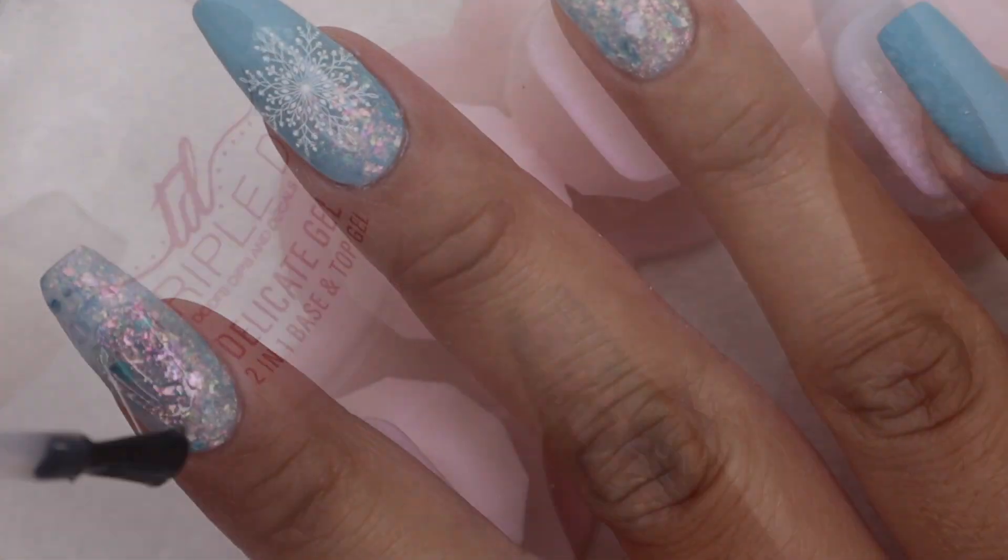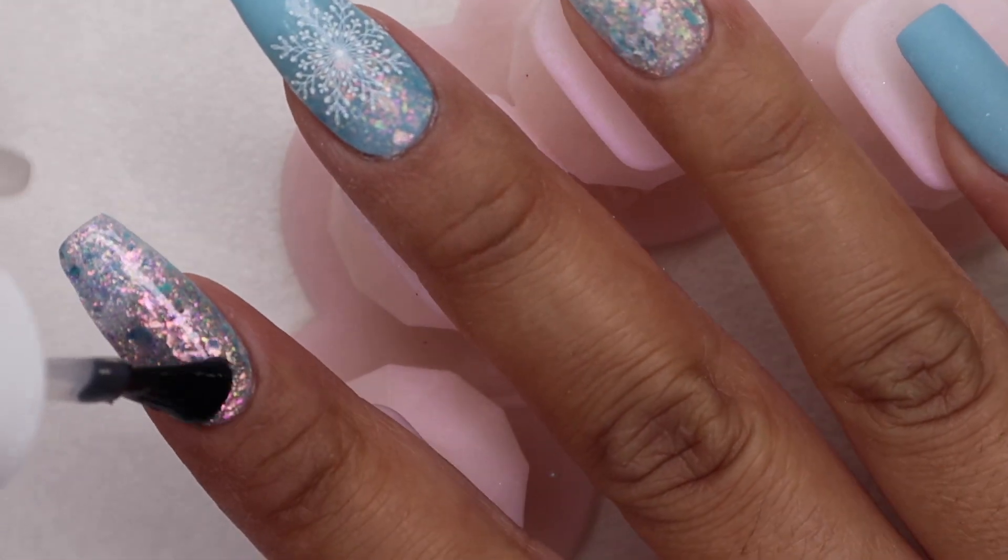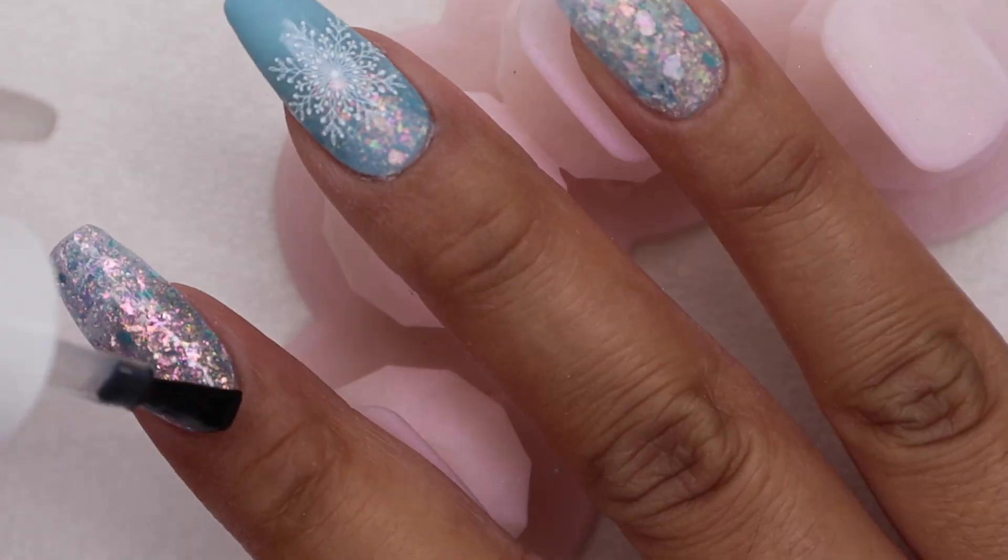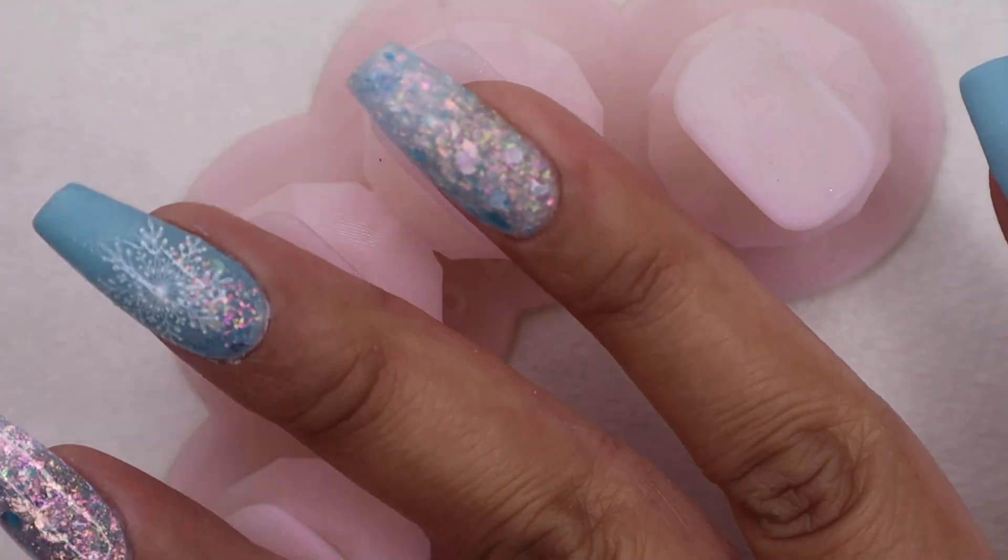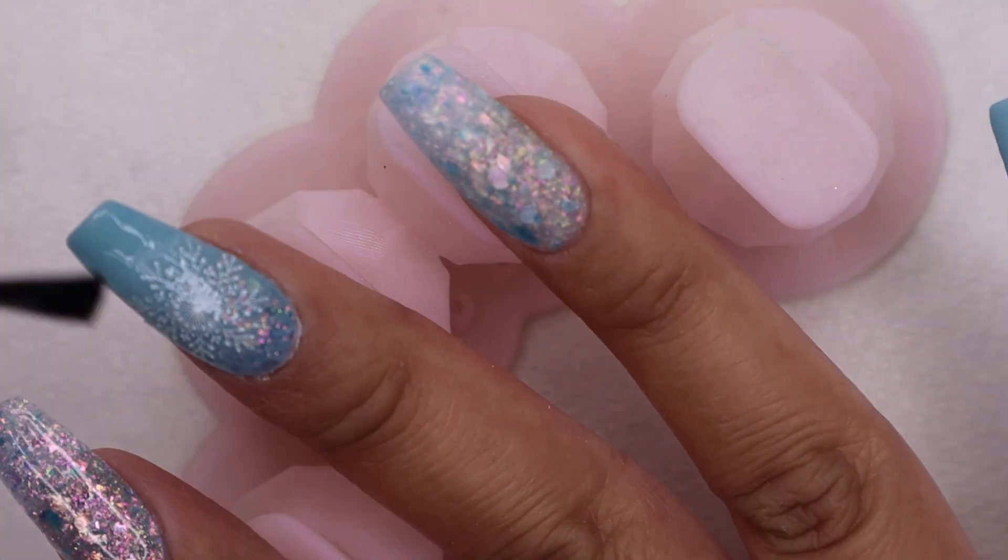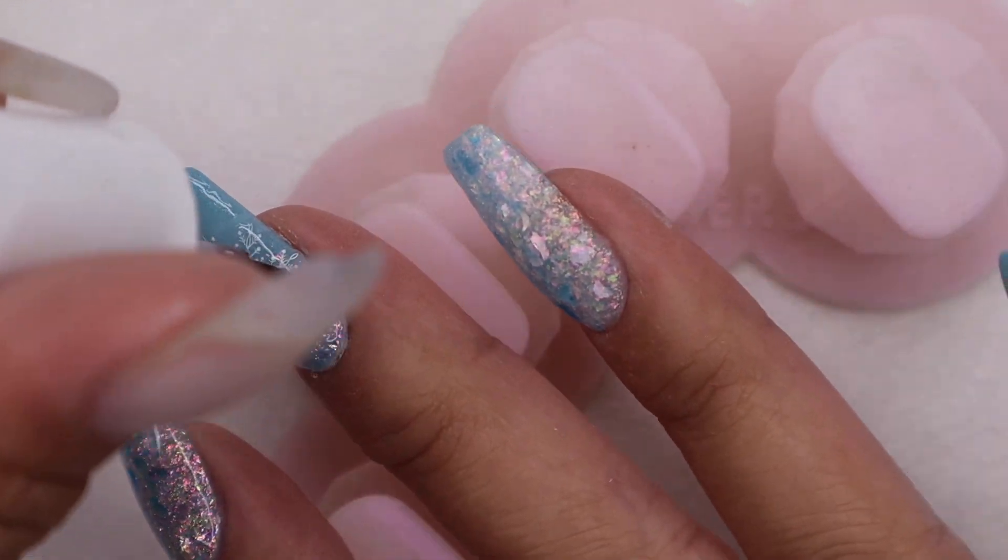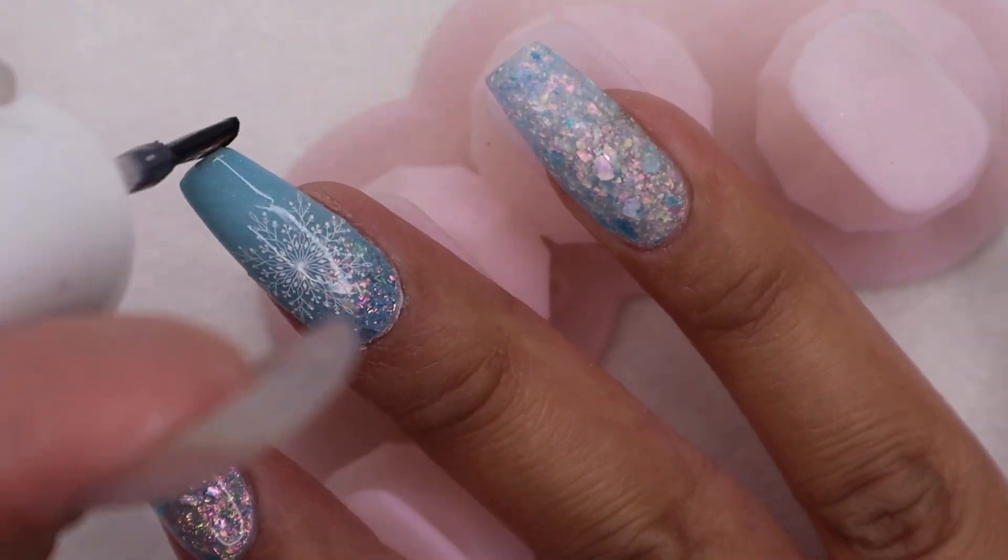To make my nails really shine, I am going to apply this Delicate 2-in-1 gel base and top coat. Make sure to really cap the sides and the tip so that your nails will last longer. Apply this and cure it in the lamp for 60 seconds.